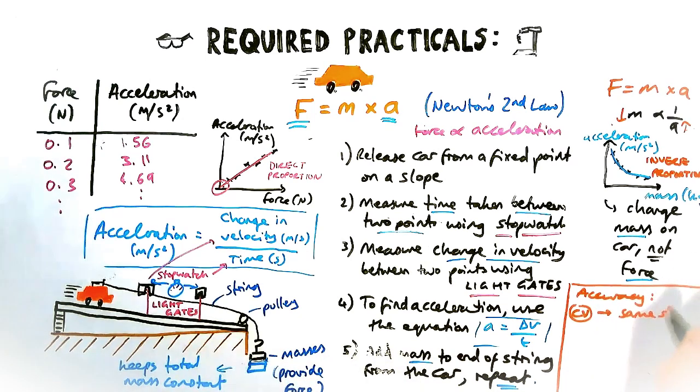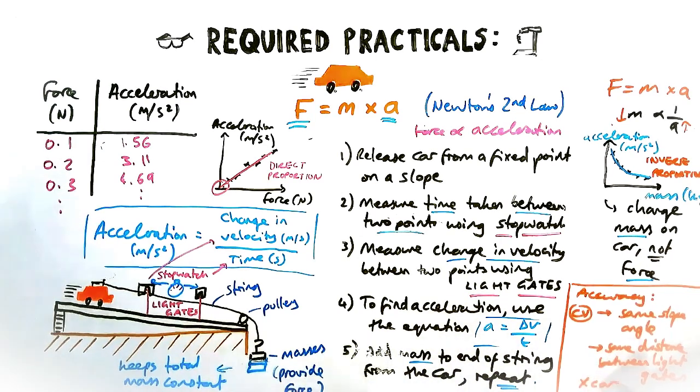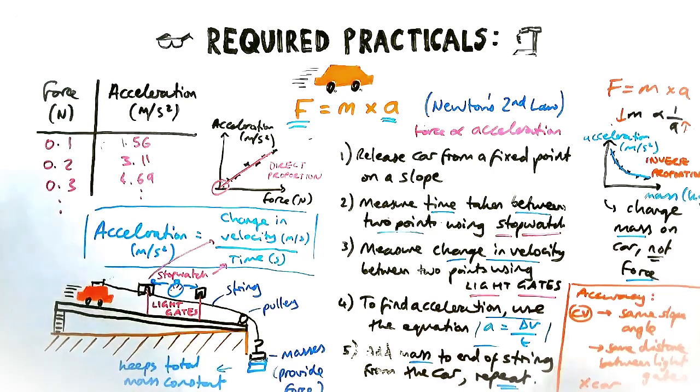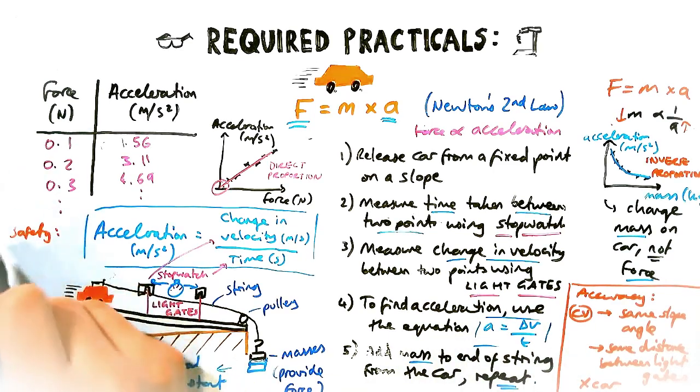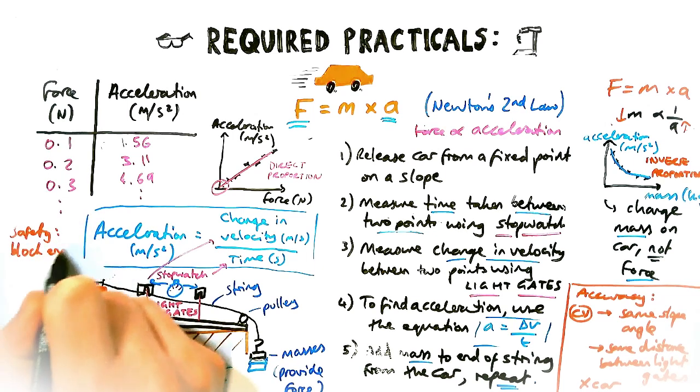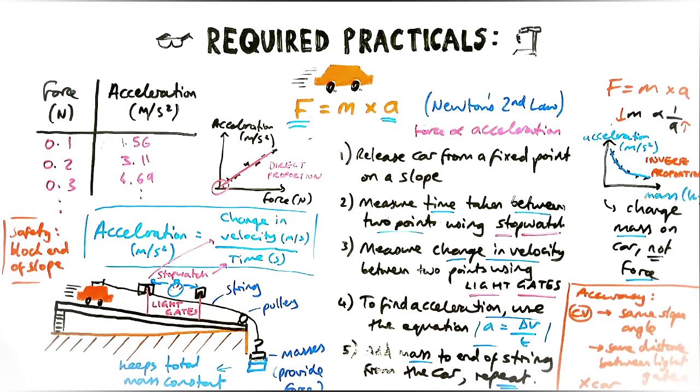Accuracy: regardless of what the independent and dependent variables are, control variables are absolutely vital in this practical. You've got to have the same slope angle for the whole practical; you can't change the angle at all. You've got to make the same distance between light gates as well, otherwise again it won't be a fair comparison. Don't say things like the car for control variables because it's kind of obvious you're going to keep the car the same throughout. For safety, have someone or something catching the car at the end of the slope, and that should be all that.